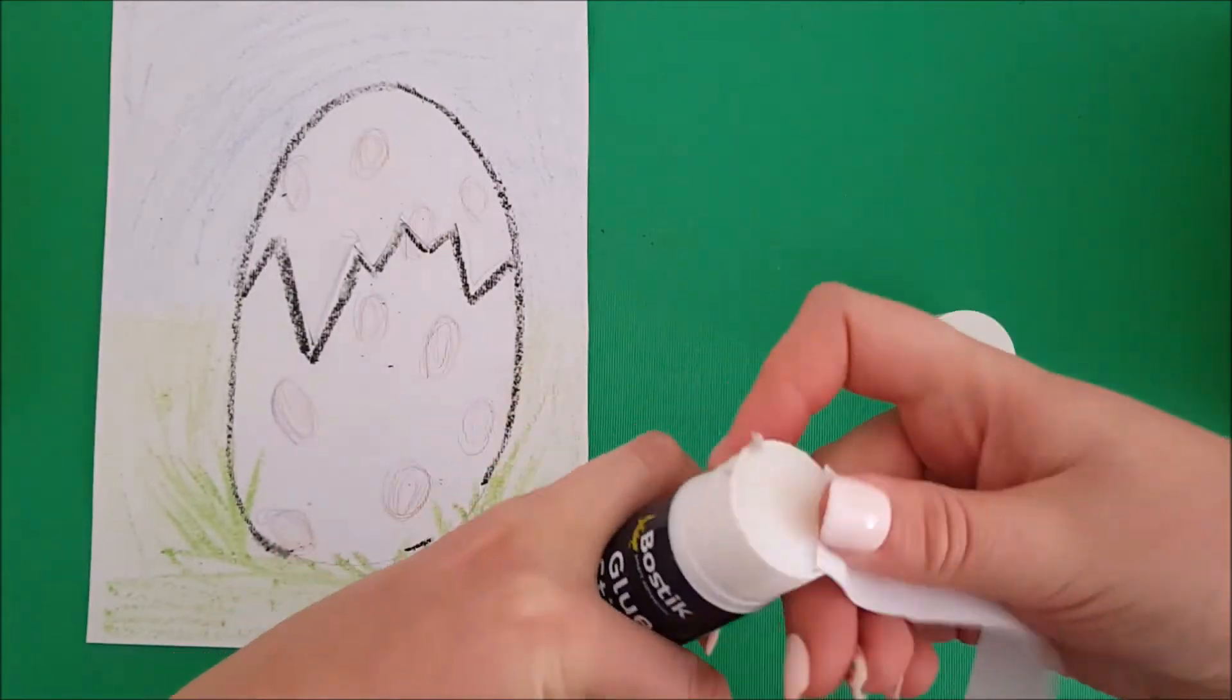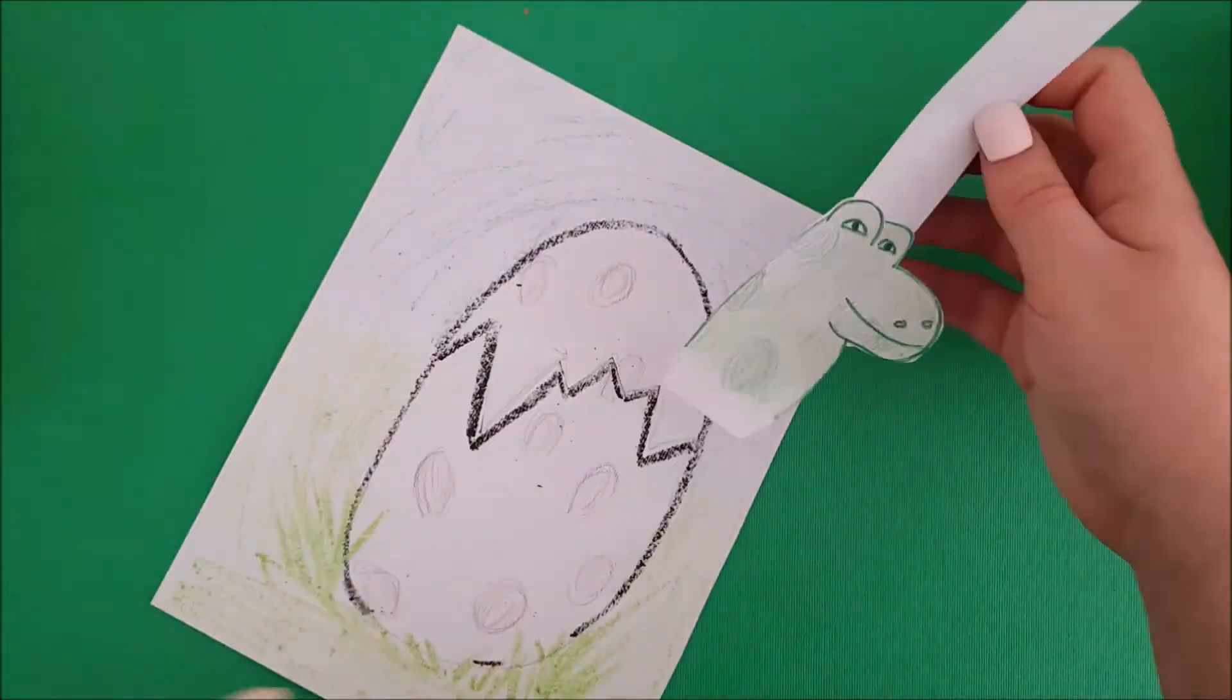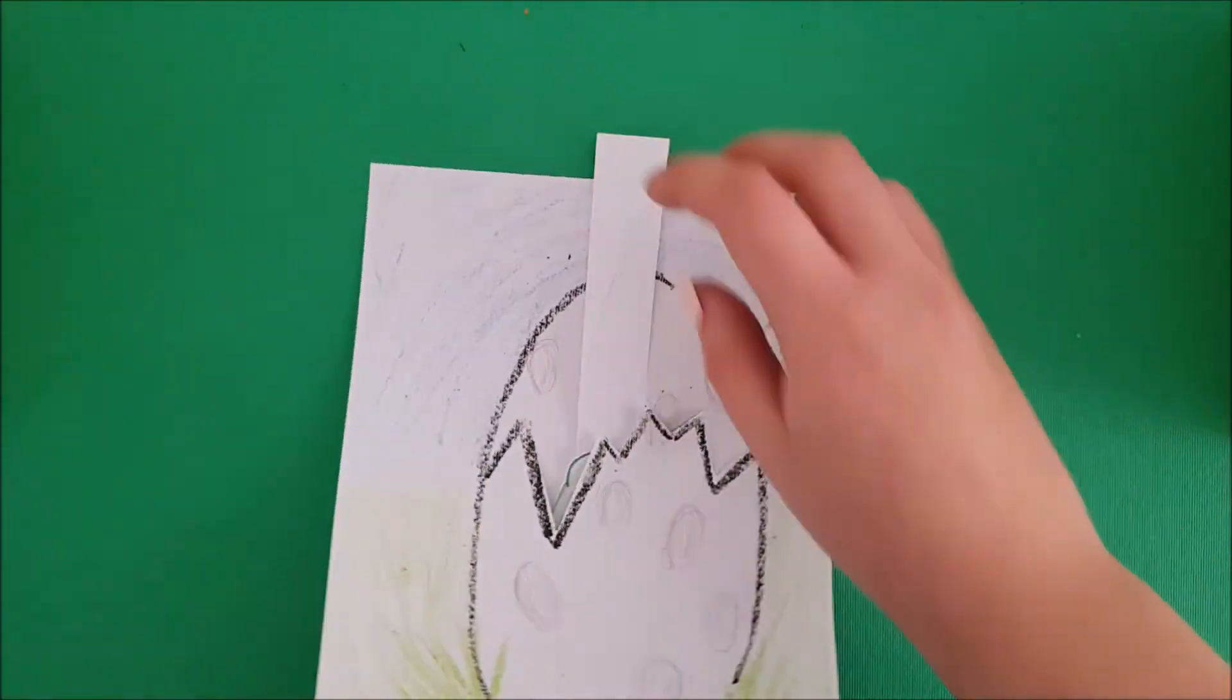When you are ready, add a strip of extra paper to the back of your dinosaur and place it behind your egg crack with the strip sticking out.